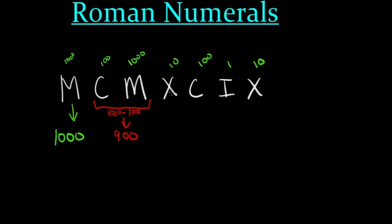We realize that we have another lower value number before a higher value. So in this case again, we are going to subtract 10 from 100 to give us 90. The final two numbers are also subtraction, 10 minus 1 gives us 9. So it would be 1000 plus 900 plus 90 plus 9, which is 1999.